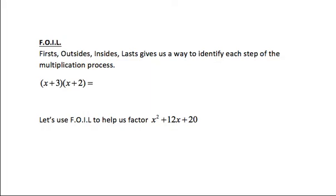FOIL — Firsts, Outsides, Insides, and Lasts — gives us a way to identify each step of the multiplication process. Let's multiply the two binomials x plus 3 times x plus 2 using this FOIL method. The FOIL method is really just following the distributive property twice. I would first distribute the x: x times x are my Firsts, and that gives me x squared.